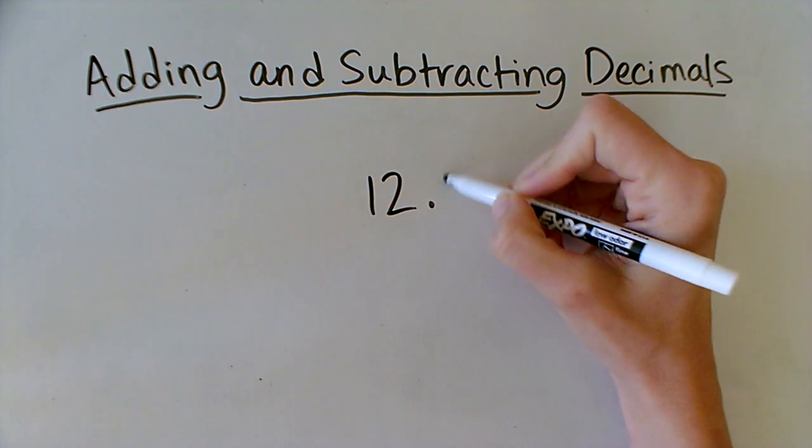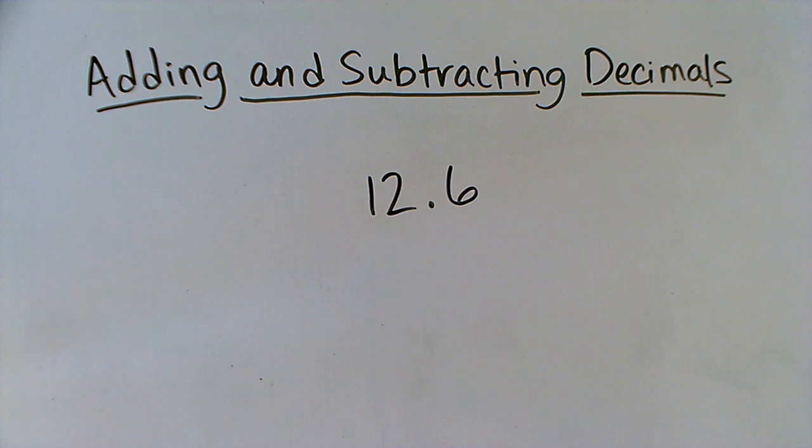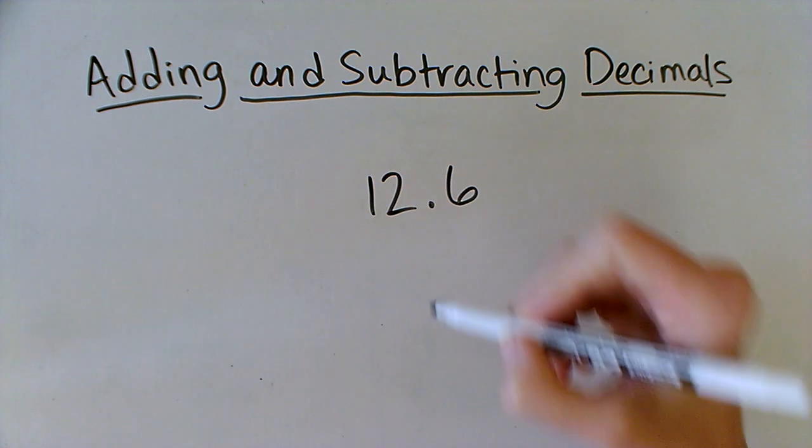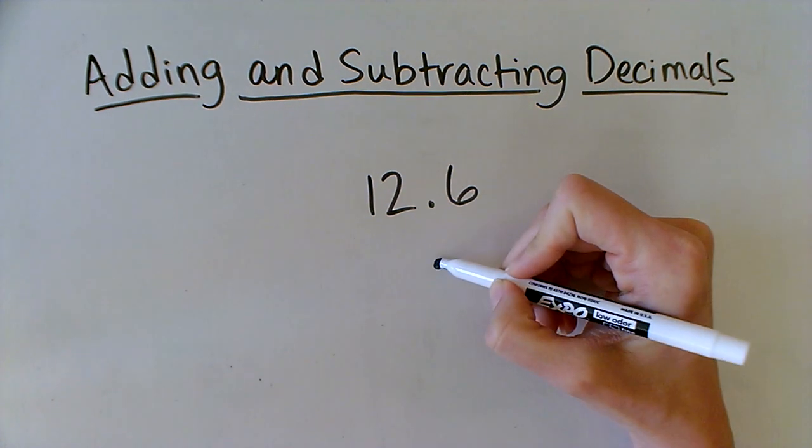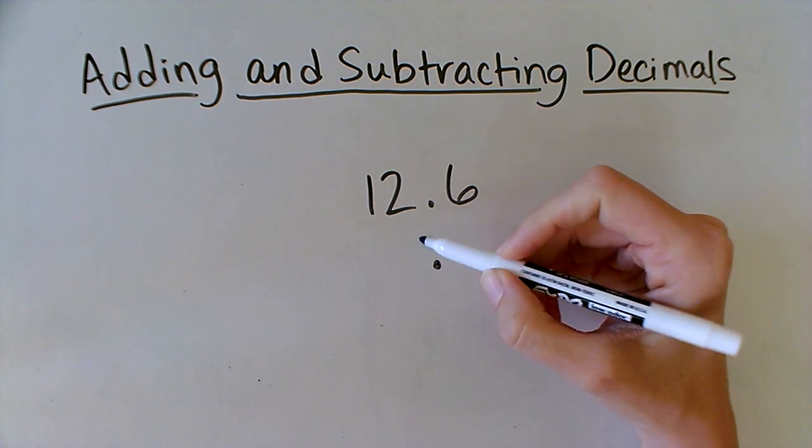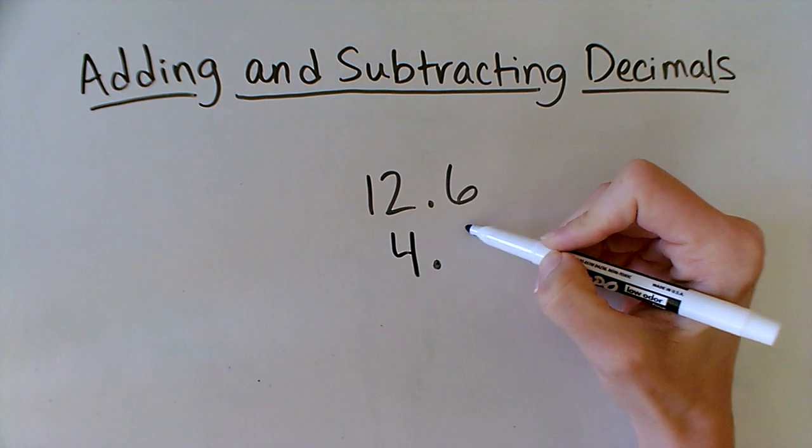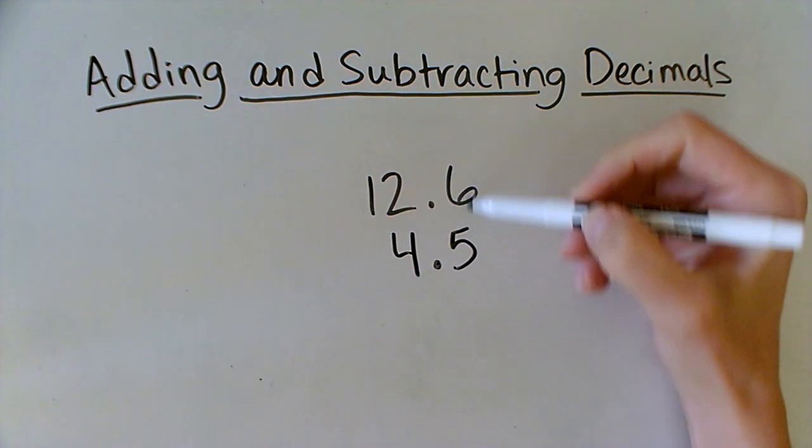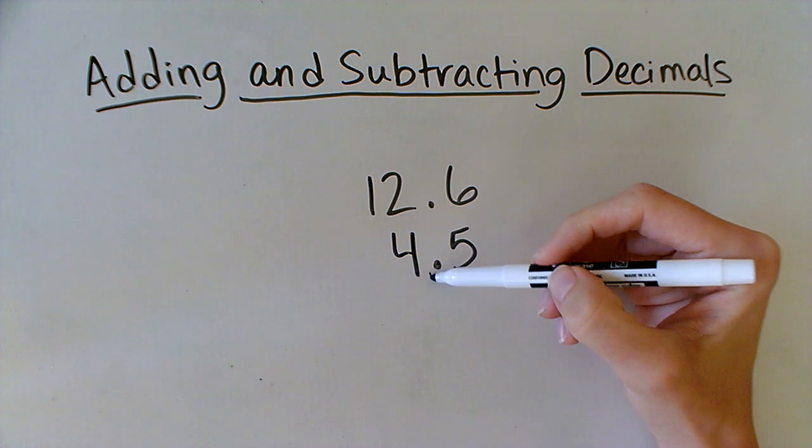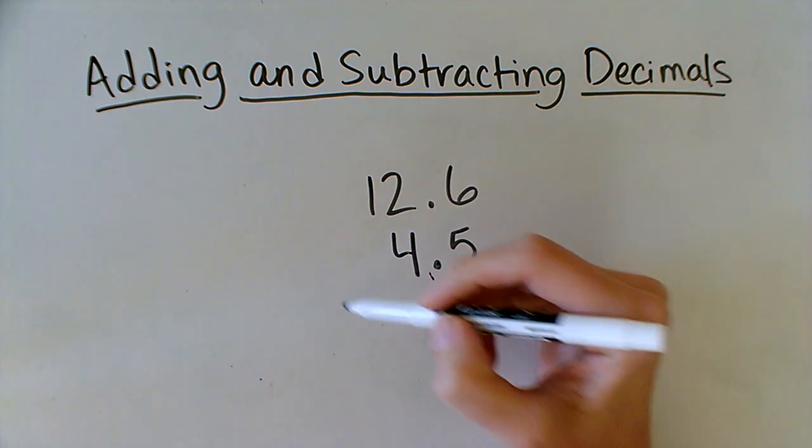So if I have 12.6 on top, I'm trying to line up 4.5. A good way to start is just to get your decimal underneath the other decimal. 4.5. Now I have the tenths lined up, the ones lined up, and the tens lined up.